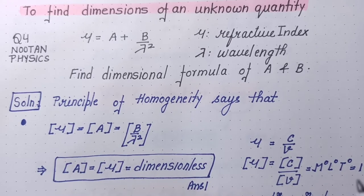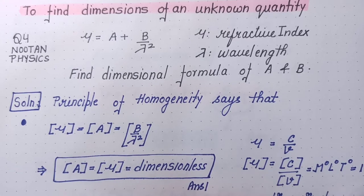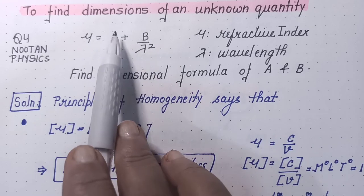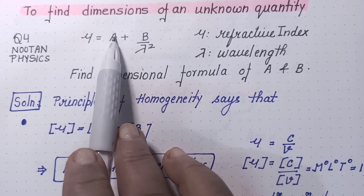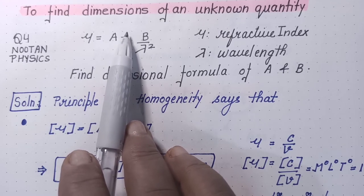So, well class, in previous classes we have done few questions in which we found the expression of a quantity when we were told about the factors on which that quantity depends. That was the first application of dimensional analysis technique. Now, today we are going to learn the second application of dimensional analysis technique and that is if we are given a formula and we are given unknown quantity then we can calculate dimension of unknown quantity by using principle of homogeneity and dimensional analysis technique.